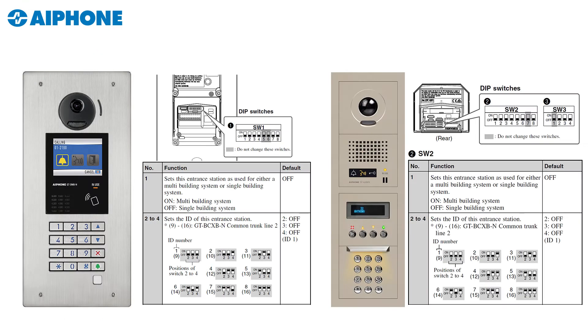If you're using two entry panels, each panel must be given a unique ID. To do this, follow the chart below and flip the dip switches to the proper IDs.